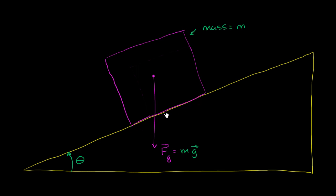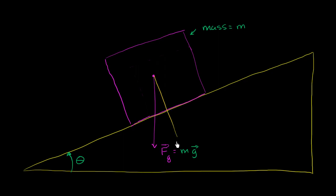Over here, the surface is not perpendicular to the force of gravity, so we have to think about it differently than if the block were sitting on level ground. What we can do — and should do — is break up this force due to gravity into components that are either perpendicular to the surface or parallel to the surface. Then we can use those to figure out what's likely to happen and what the netting or balancing forces are.